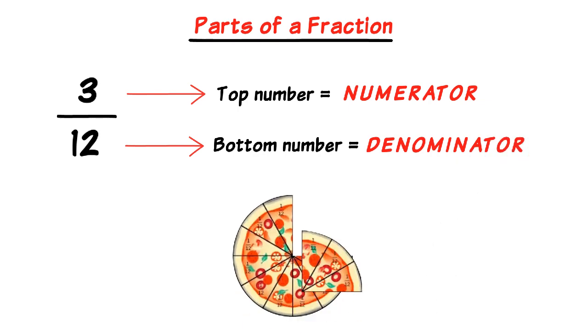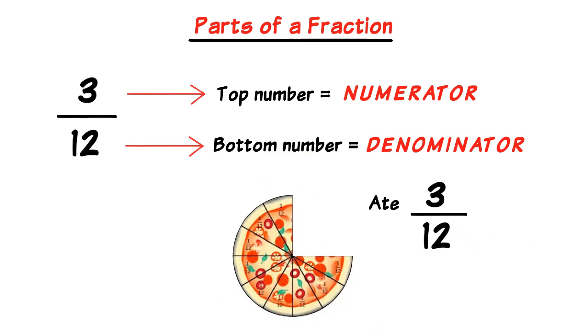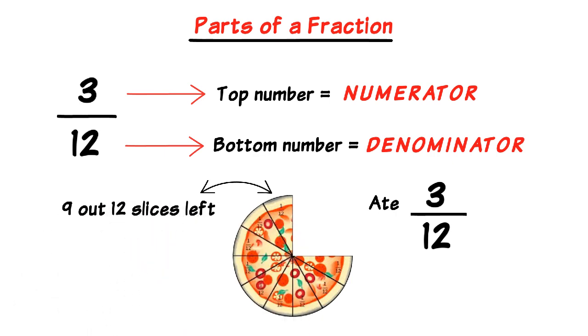Now going back to the pizza example. If we ate 3 out of the 12 slices, so 3 have been eaten. Since there were 12 slices in total, this means that there are 9 slices of the pizza left that haven't been eaten. And to represent this as a fraction, we write 9 over 12 or 9 out of 12 or 9 twelfths of the pizza is left.